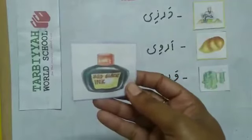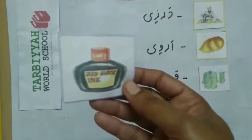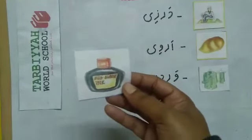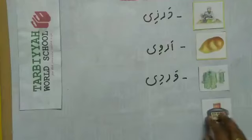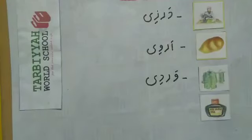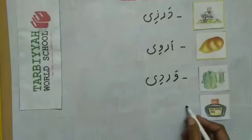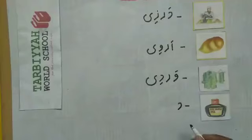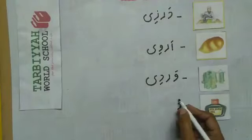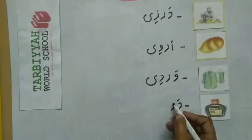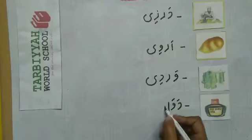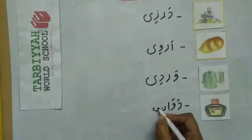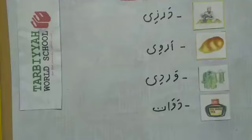Can you tell me what is this? Yes, this is an ink pot. But in Urdu we say it Davat. So see how we write the word Davat: Daal — zabar — Vau — Alef — zabar — Te. Like this. This is how we write the word Davat.